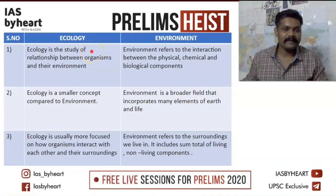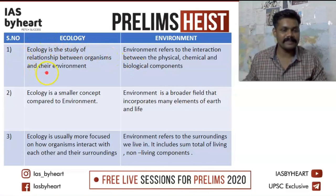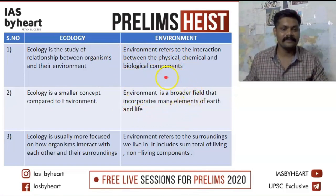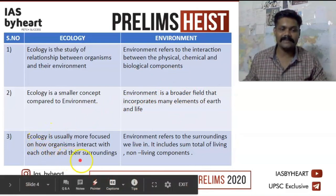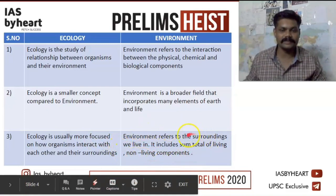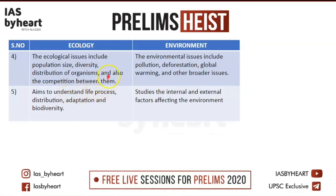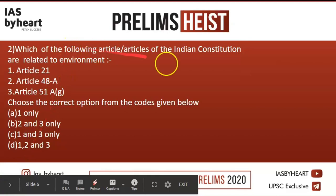Ecology is a smaller concept compared to environment. Ecology is the study of relationships between organisms and their environment, whereas environment involves interaction between physical, chemical, and biological components — it is the broader field that includes all elements of work and life. Ecology focuses on how organisms interact with each other and their surroundings. Environment refers to the sum total of living and non-living components. In ecology, competition, population size, diversity, and distribution are major issues, whereas in environment, deforestation, global warming, and pollution are the major issues.